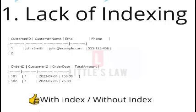The SQL query itself — SELECT * FROM orders WHERE customer_id = 1 — is the same as before. The only difference is that we've created an index on customer ID in the orders table. With the index in place, the database efficiently accesses only the rows matching customer ID 1, resulting in much faster query execution.